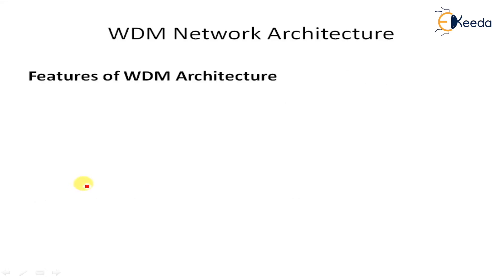Now the features of WDM architecture. In the general architecture, the different WDM network elements — OLT, OADM, and OXC (cross-connects) — are all connected by links joining the different components together. Based on this, some features are required for the architecture. We have generally discussed how all these devices are connected between two different regions, and that is why these features are defined.